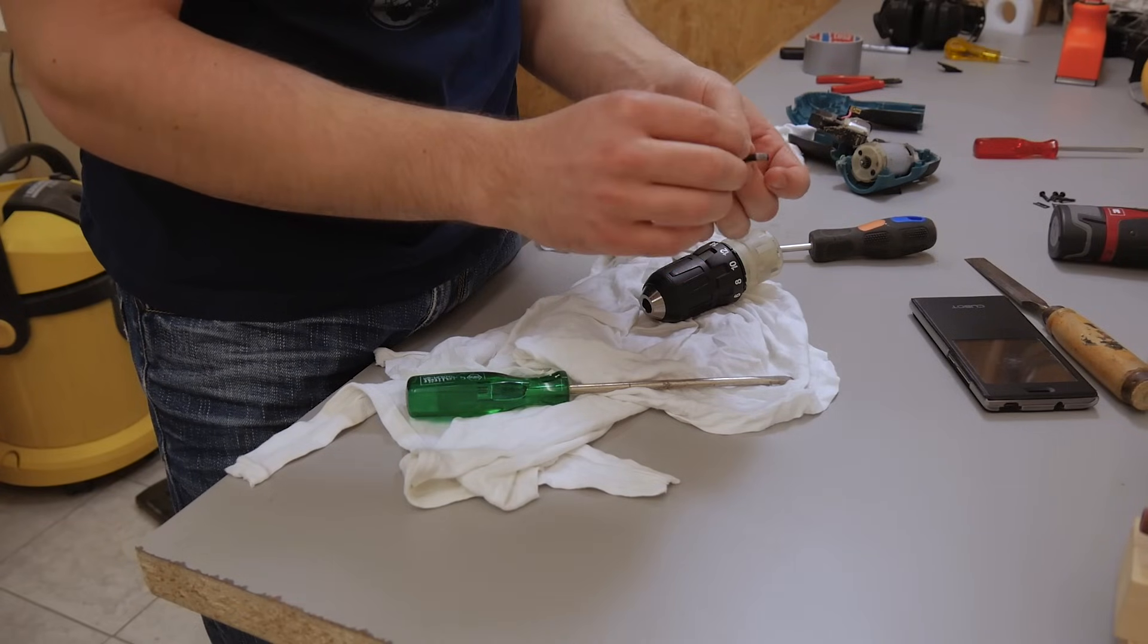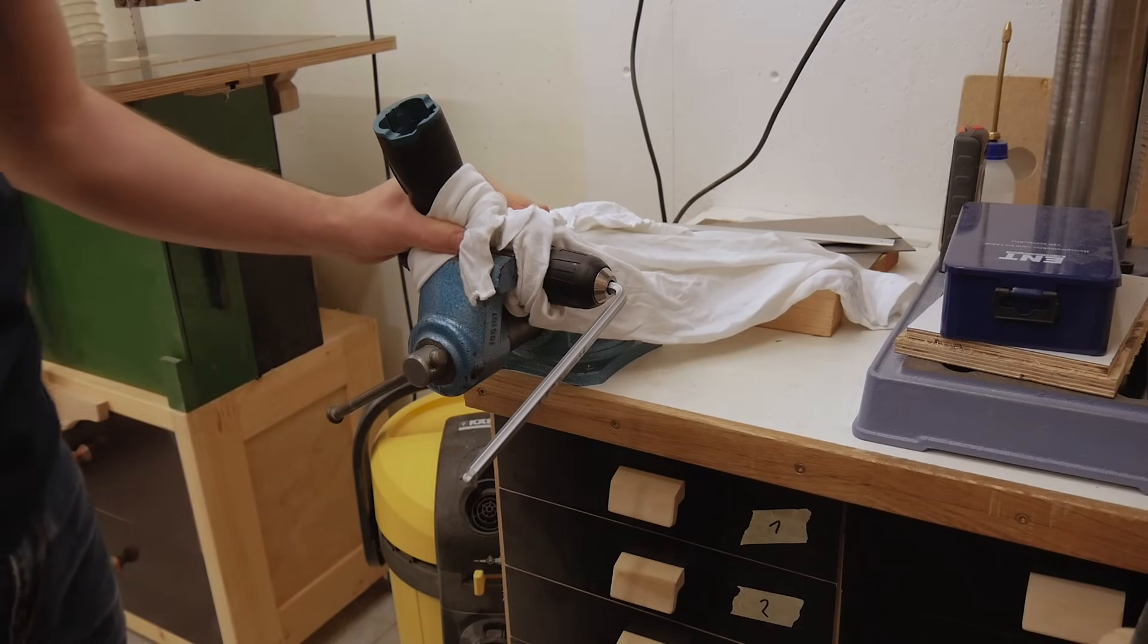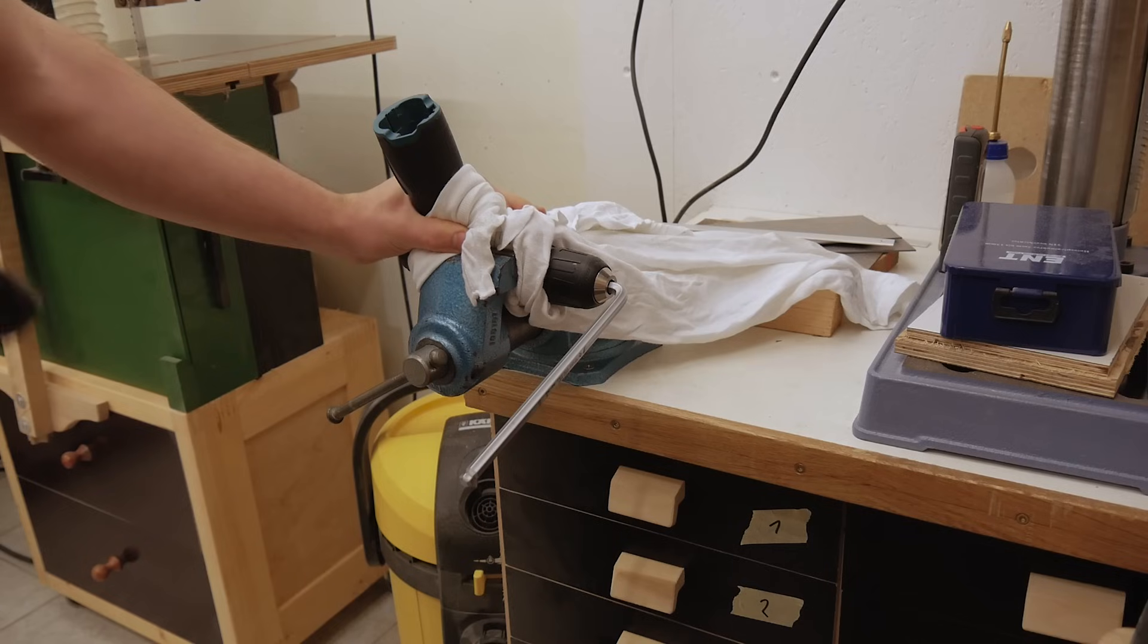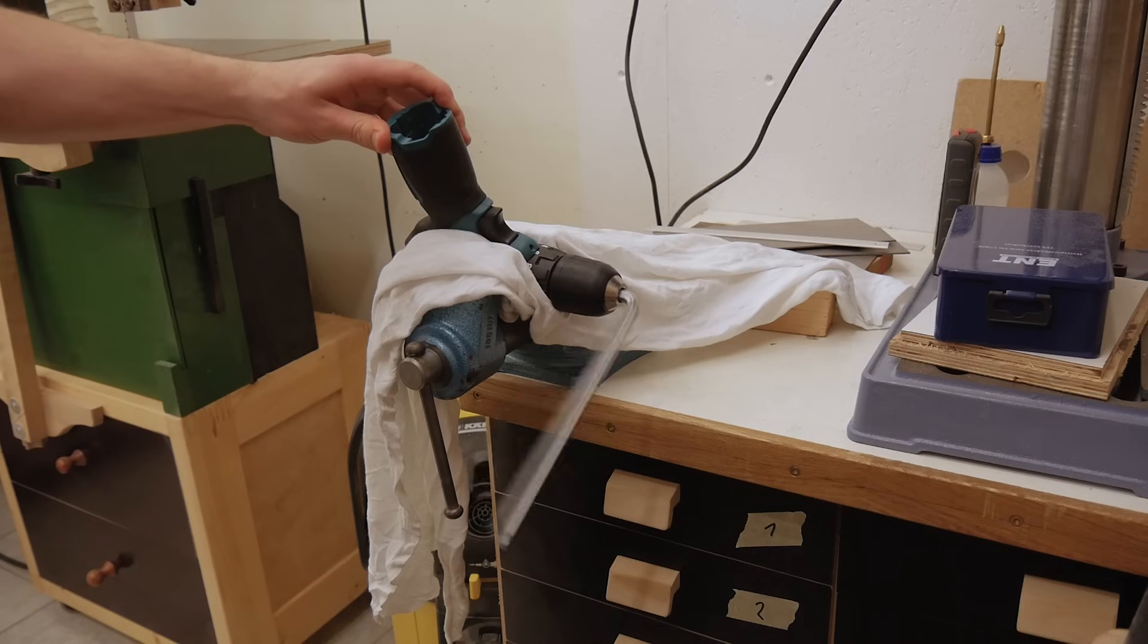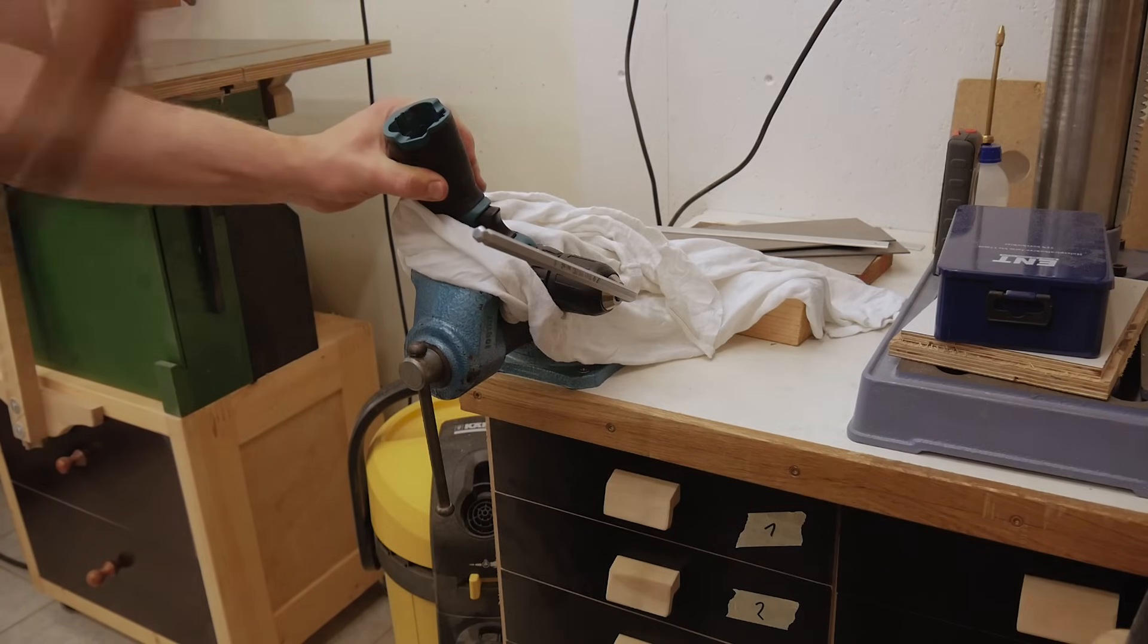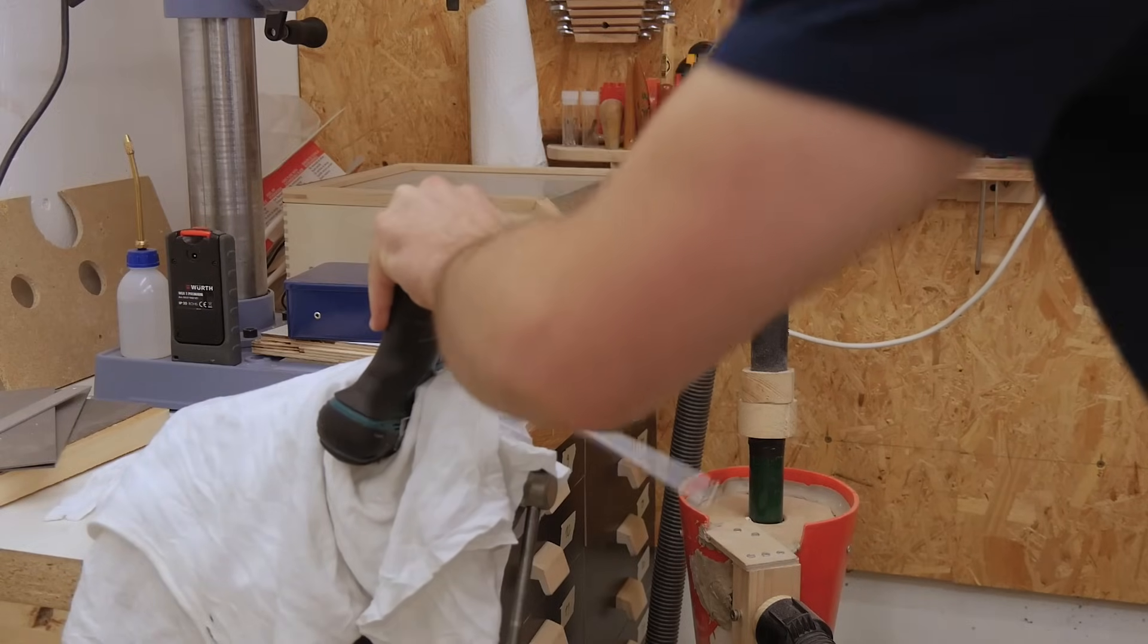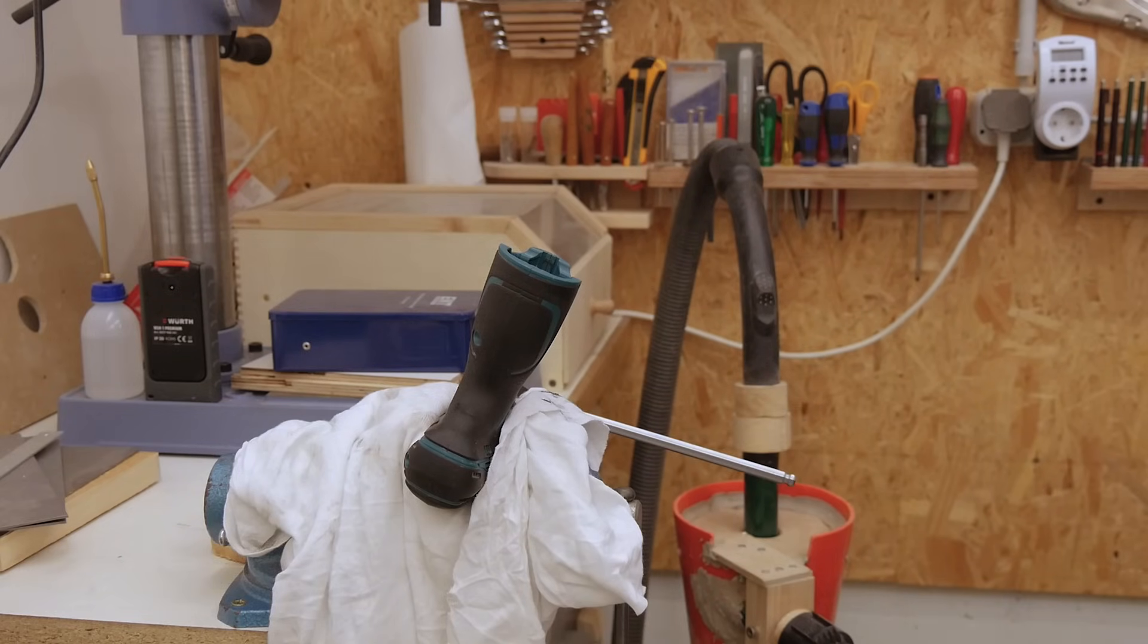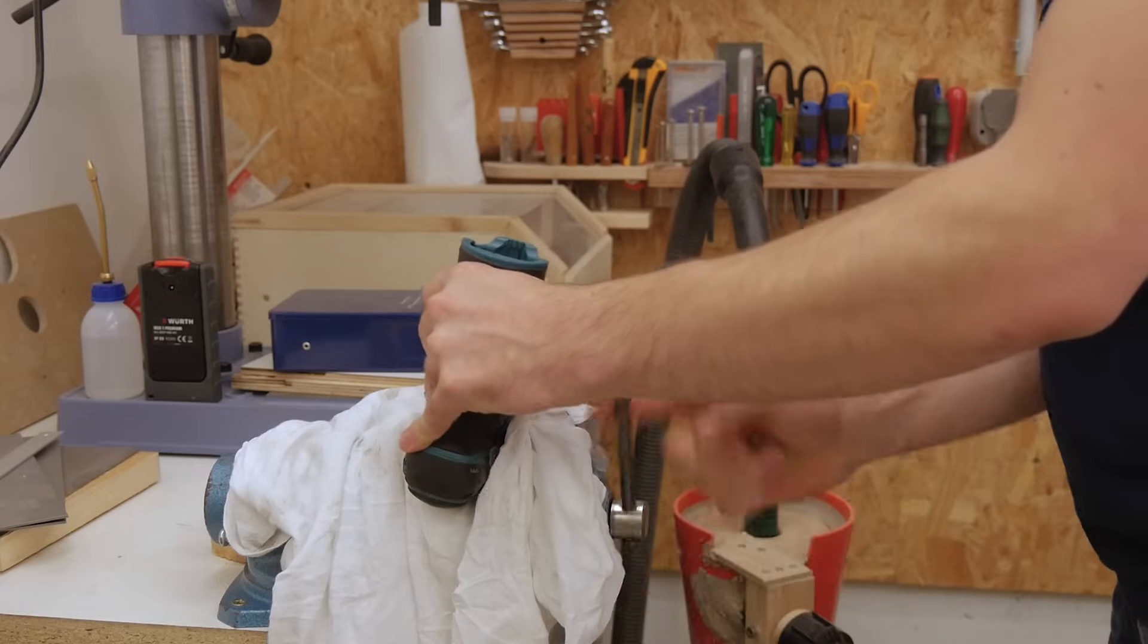Well like I thought, left threaded screw and Loctite. I put the drill partly back together so that I can now fully remove the chuck. Hopefully that works. Finally.